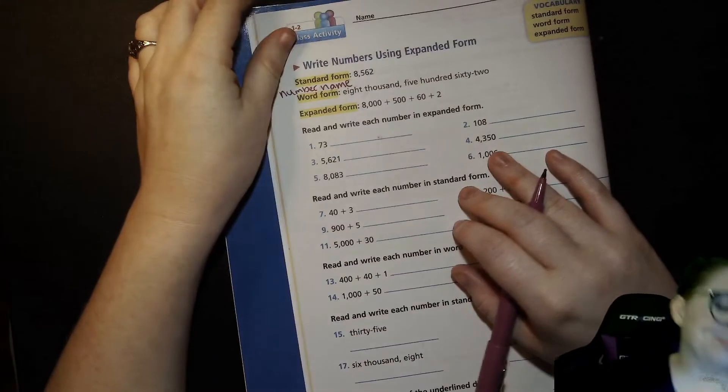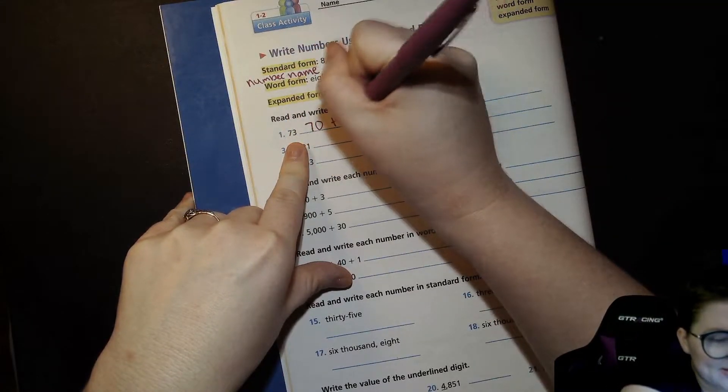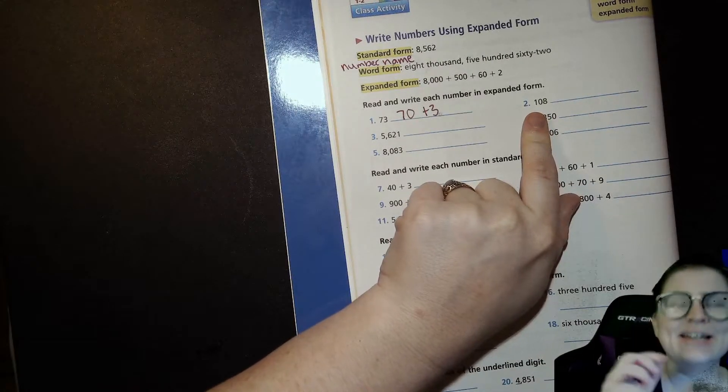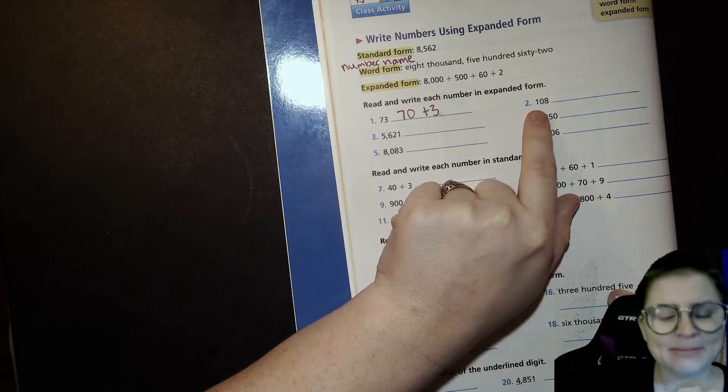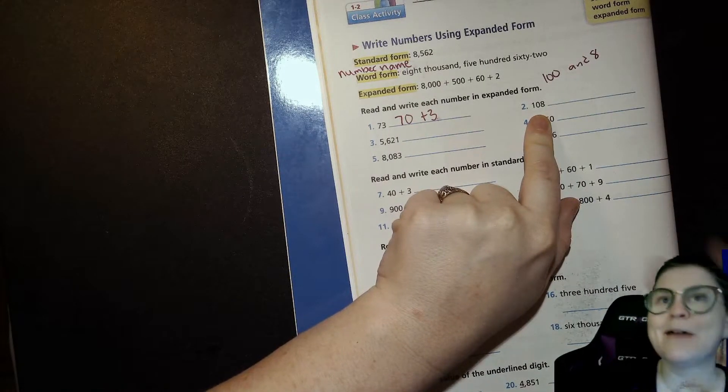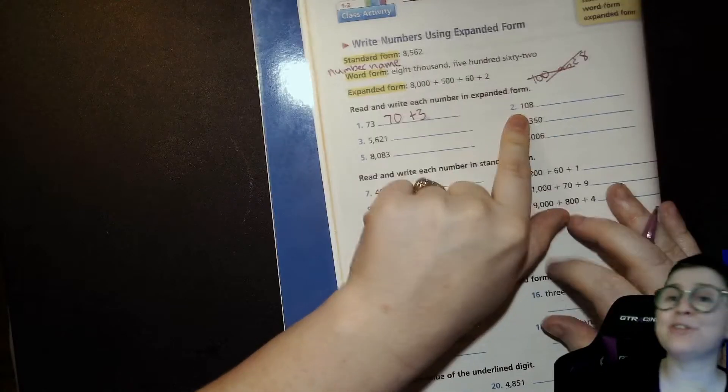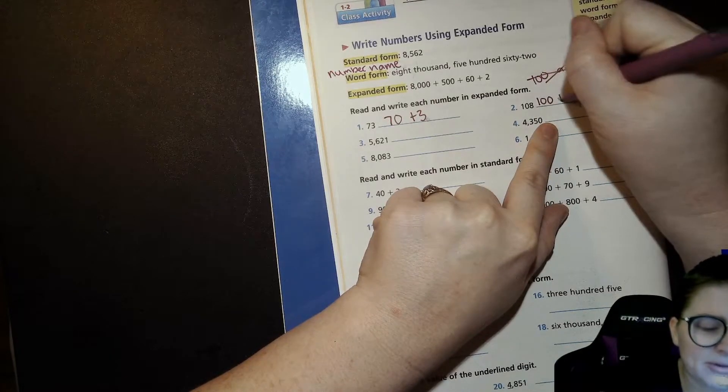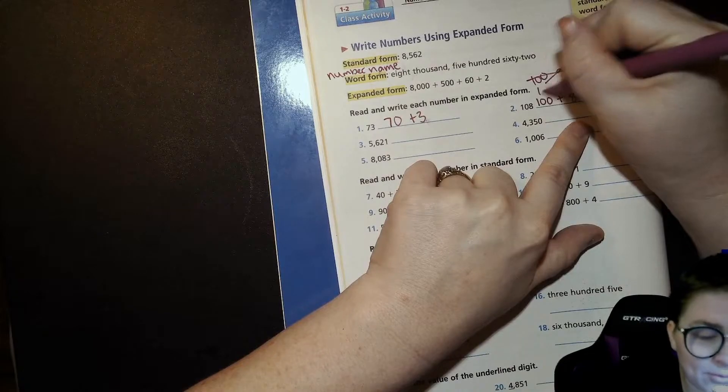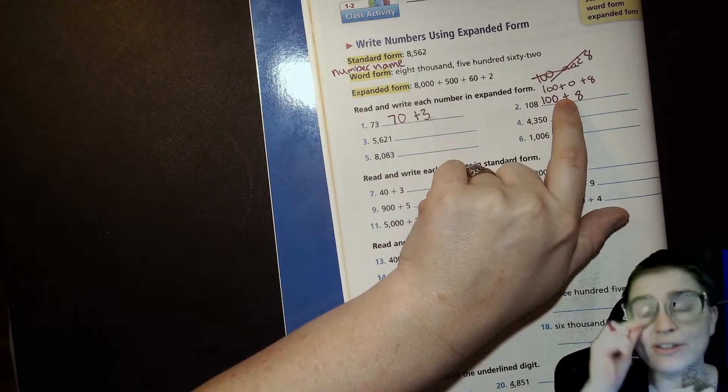We're going to just dip our toes into it and get used to practicing putting numbers in different forms. Read and write each number in expanded form. So 73 would just be 70 plus 3. 108—and you'll notice I said 108. It's really common for people to say something like 108, but that can be confusing if people are like, wait, do you mean 100 and 8? Or it can also be confusing when we talk about numbers with decimals. So we're not going to say 108, we're going to say 108. 100 plus 8. There's no tens in that one, so it would also be mathematically acceptable to say 100 plus 0 plus 8 if there is some circumstance where you needed to indicate specifically that there are zero tens.